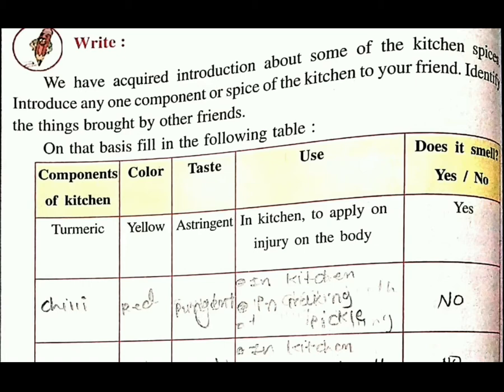On the diet, we fill in the following. Now we are going to prepare the table. Here is turmeric, which is called haldi. The color is yellow. The taste is called astringent.